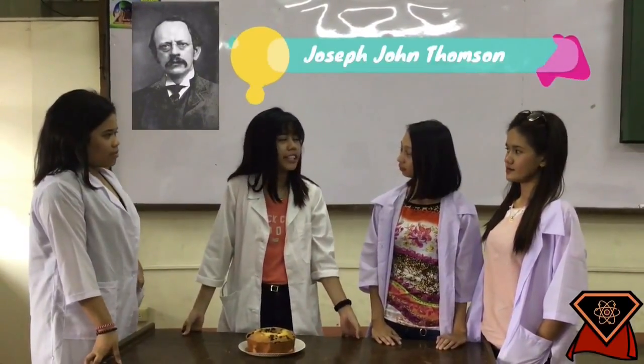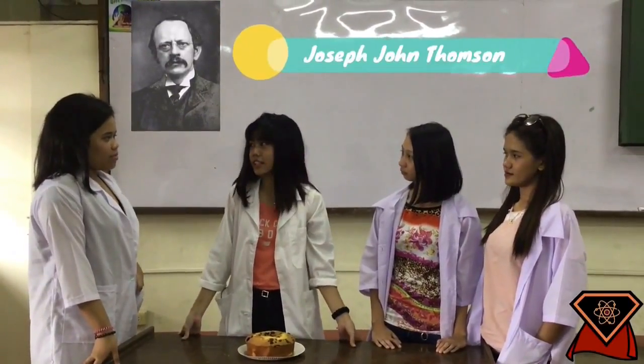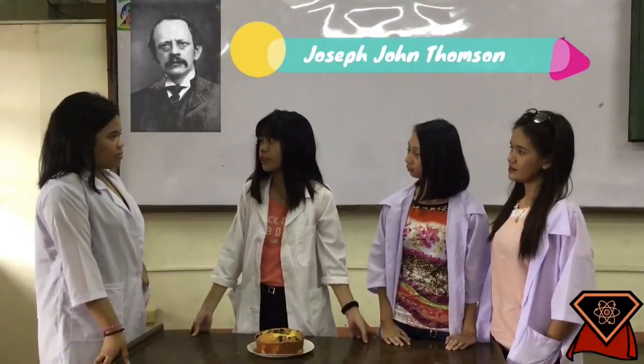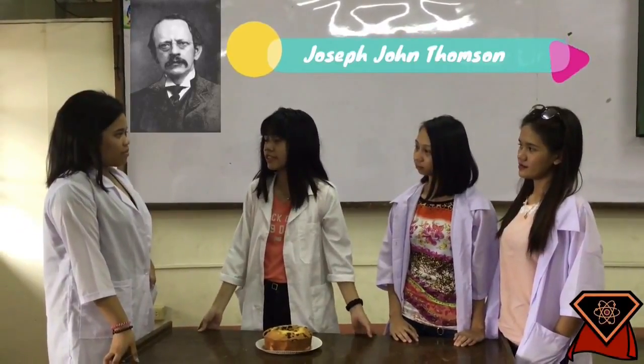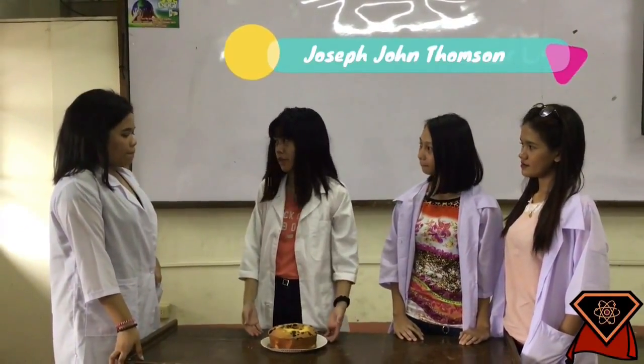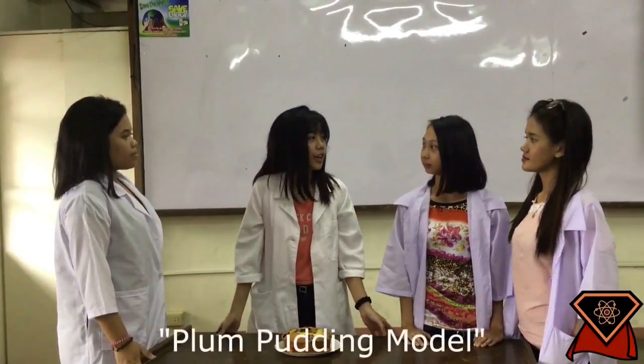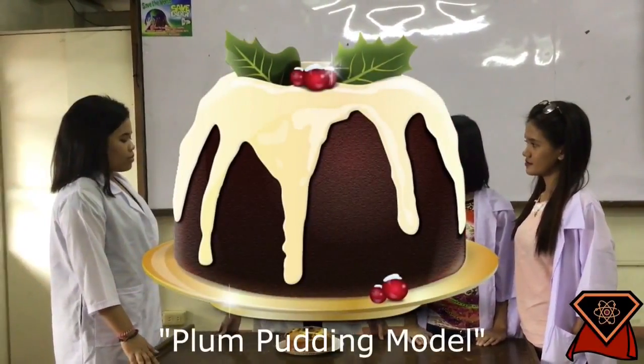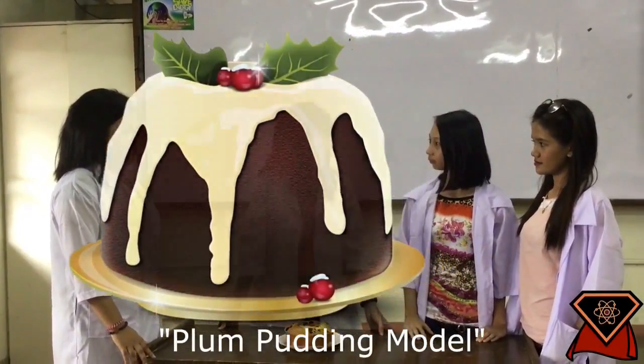Joseph John Thompson, an English physicist and a Nobel laureate in physics, is the one behind this model. He called this model the plum pudding model. He is the one who discovered electrons way back in 1897.